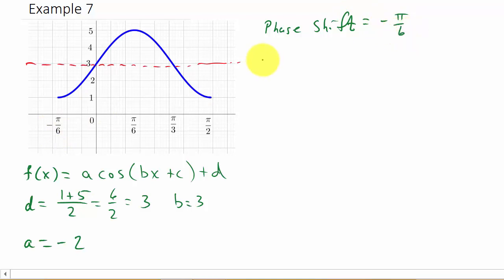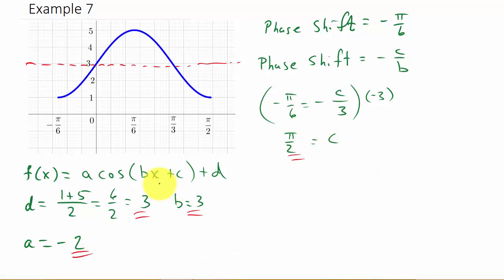Okay. Now, do we remember the formula for the phase shift? Well, we know the phase shift is equal to negative c over b. Okay. So, the phase shift is negative π over six. So, negative π over six is equal to negative c over b. And we calculated b to be three. Okay. So, if we multiply everything by negative three, that gets rid of the three down here in the denominator and changes the negative to a positive. We actually get c is equal to what is that? π over two. Okay. So, now you can see we have d, we have b, a, and c.